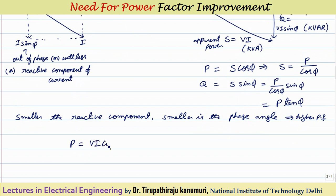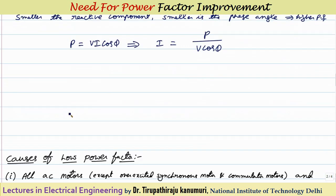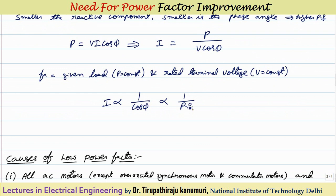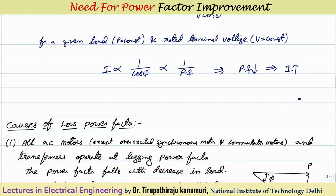We can write P equals V·I·cos phi, and from this the current I equals P divided by (V·cos phi). For a given load where power P is constant and terminal voltage V is constant, the current is inversely proportional to cos phi — that is, inversely proportional to power factor. So if the power factor decreases, this implies an increase in the current drawn from the supply.